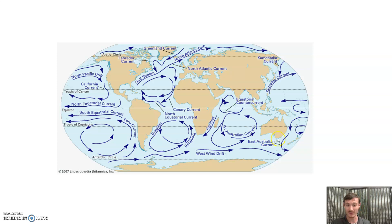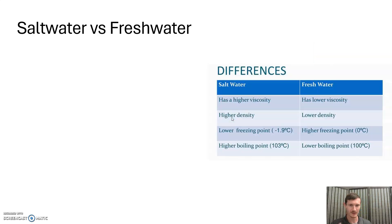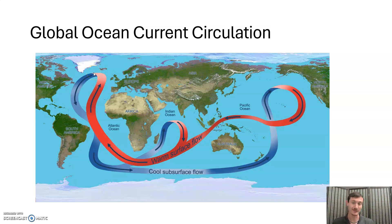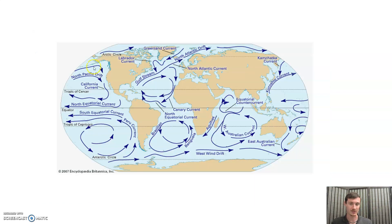On a happier note, this is our warm East Australian Current. So, going back — once you get to Greenland, you melt off a bunch of stuff because it's really warm water coming in. The water cools, which makes it denser and it sinks, but it also causes it to become fresher, less salty, which also causes it to sink.